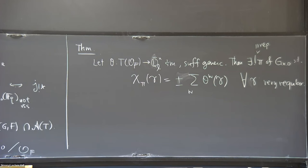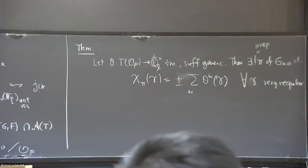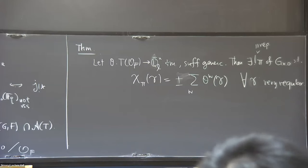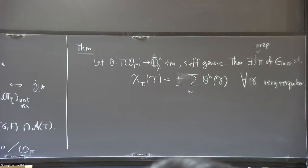What kind of object is π? Pi is an irreducible representation of G_{x,0}. It's a finite-dimensional thing — everything is smooth. Smoothness implies that everything factors through some large quotient, so in the end you're talking about a finite-dimensional representation of a finite group. But that finite group is not the points of a reductive group — it's the points of some more complicated algebraic group.